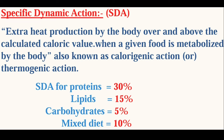The second component required for energy calculation is specific dynamic action, or SDA. SDA is defined as the extra heat produced by the body over and above the calorific value when a given food is metabolized. It is also known as calorigenic or thermogenic action. Whenever we consume any food — protein, lipid, or carbohydrate — the body uses some energy for digestion, absorption, and transport, and that energy expenditure is called SDA.